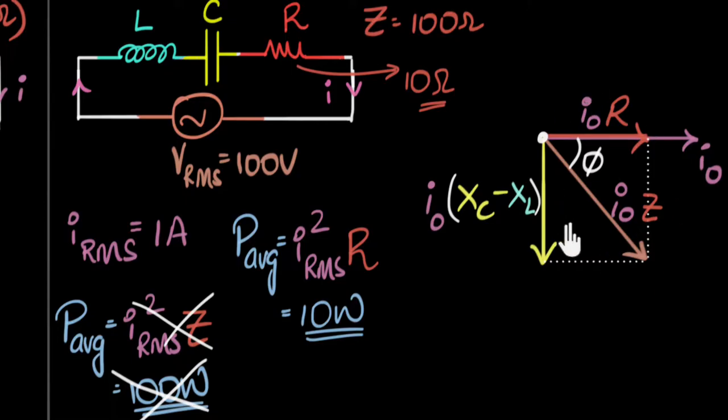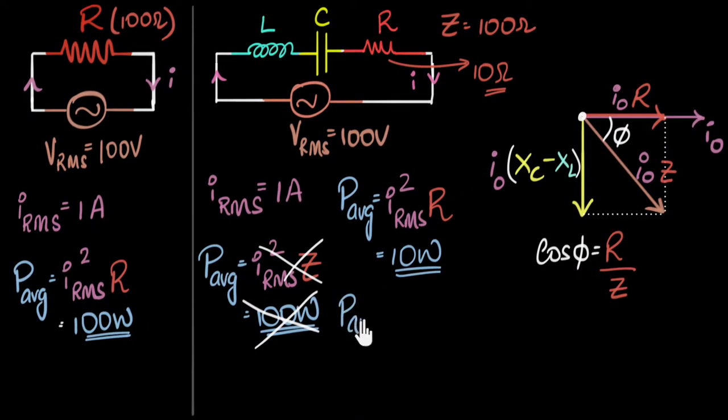So what we can do now is look at this triangle and find the relationship between R, Z, and phi, then substitute to get power in terms of Z. Since I want to connect the adjacent side and the hypotenuse, I'm going to use cos. Cos phi is R divided by Z. So R equals Z times cos phi. And as a result, average power equals IRMS squared times the impedance times cos phi. So this is the same expression, but now representing in terms of the total opposition.